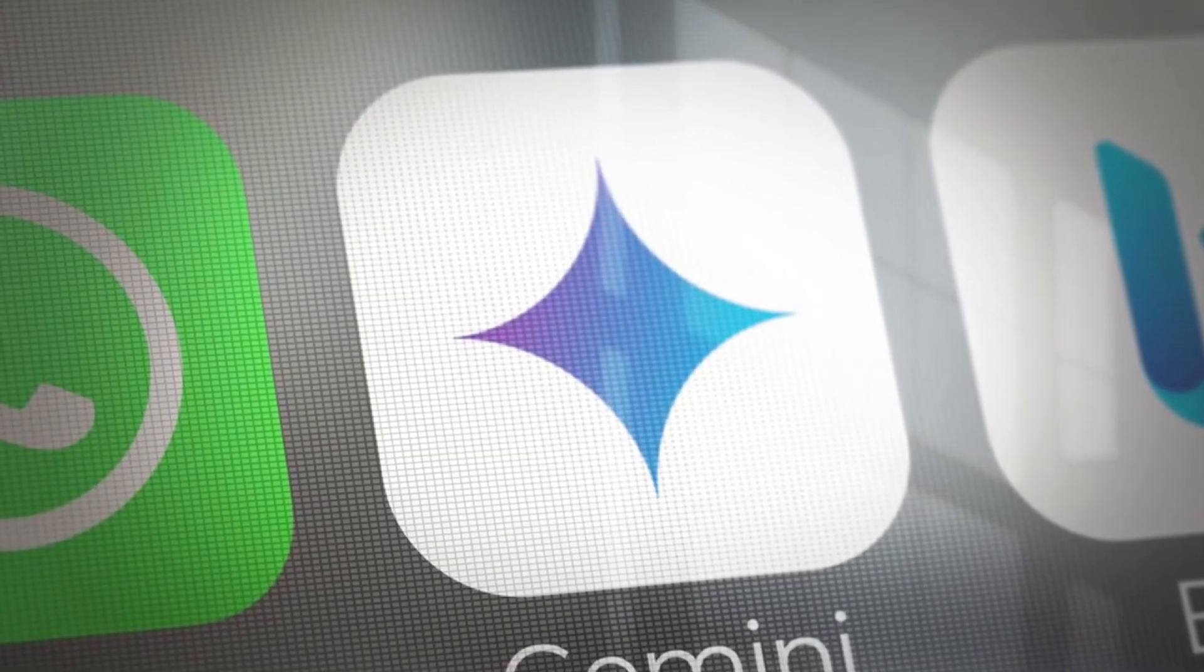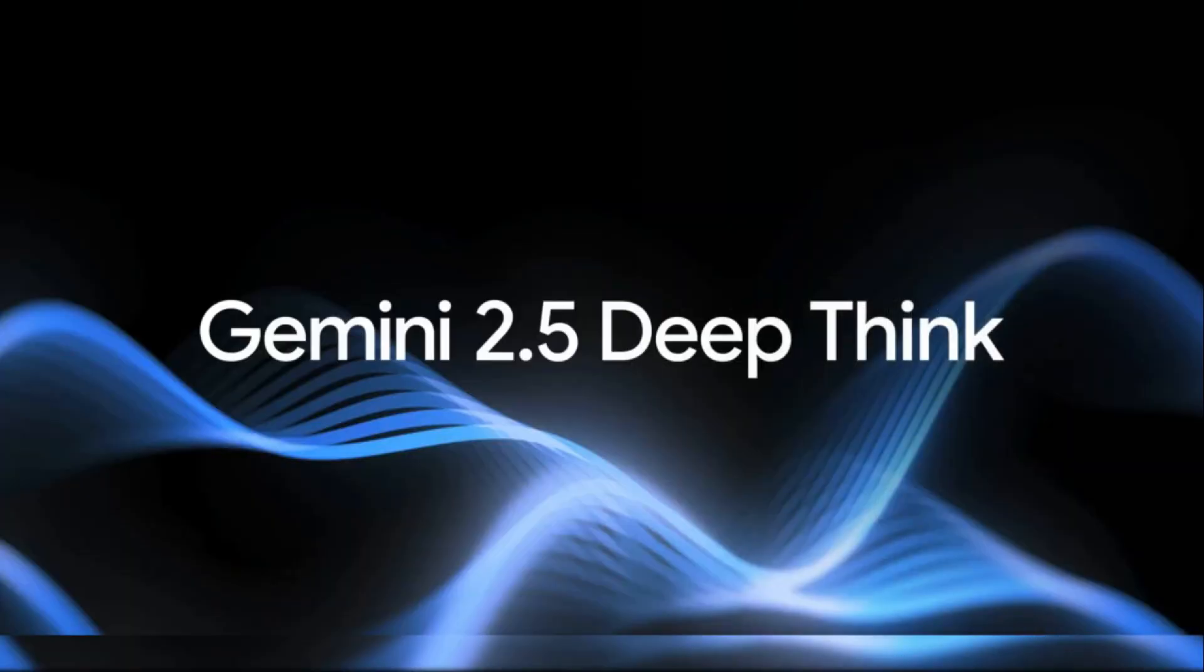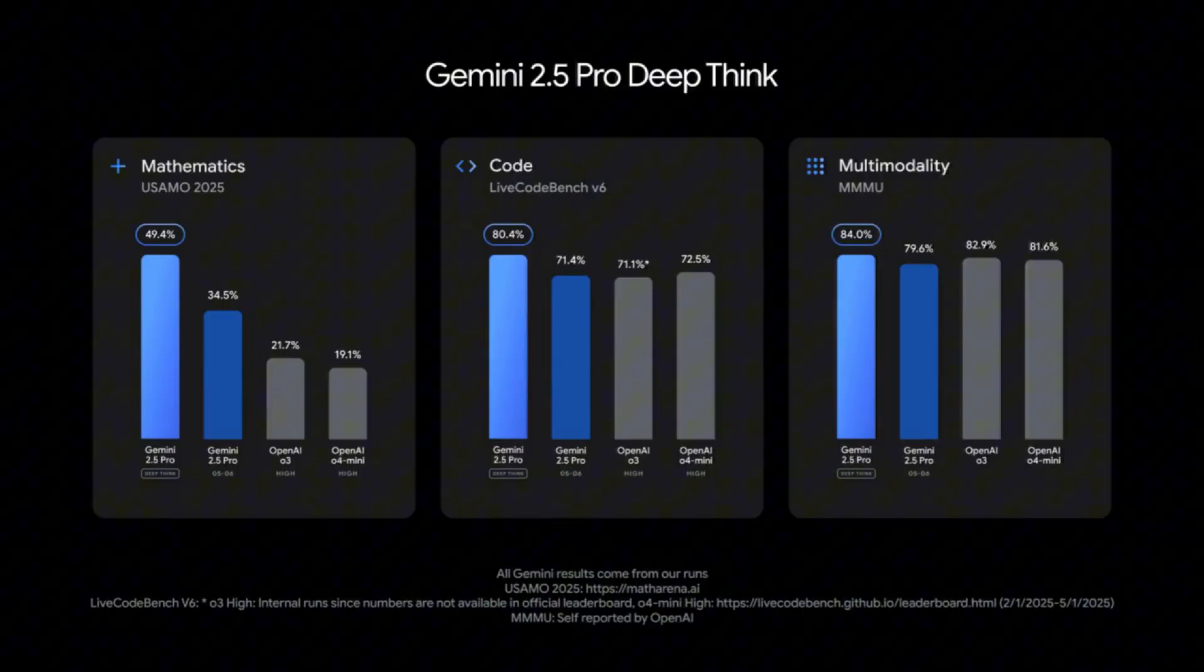Google Gemini just dropped a bombshell feature, and it's not just an upgrade, it's a revolution. It's called DeepThink, and believe me, the name doesn't even begin to capture its power. This isn't just Gemini getting smarter, it's Gemini thinking in a way no AI has before, shattering benchmarks and redefining what's possible.